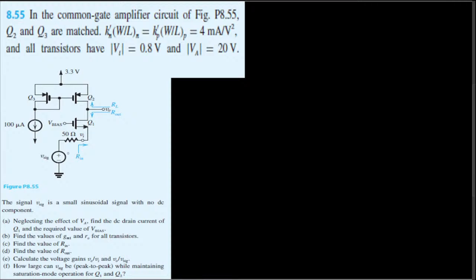First, they're asking us to find the DC drain current of Q1, so that is basically right here. If you notice, this is a PMOS on the top and the bottom we have an NMOS. You can see that by the arrow pointing in.